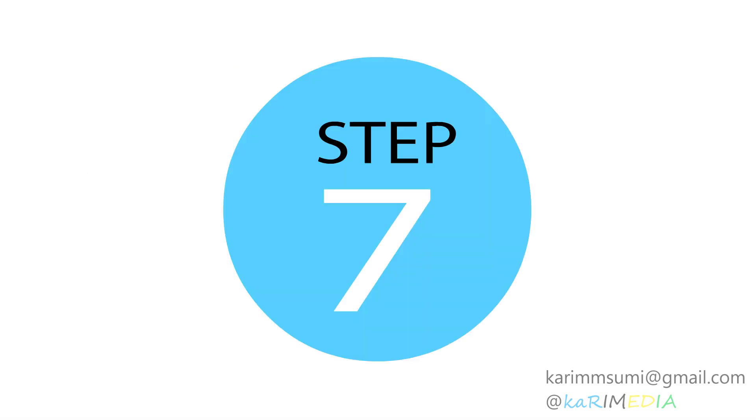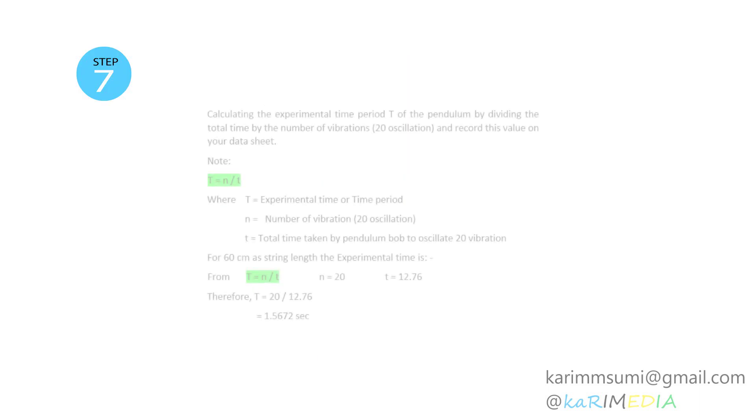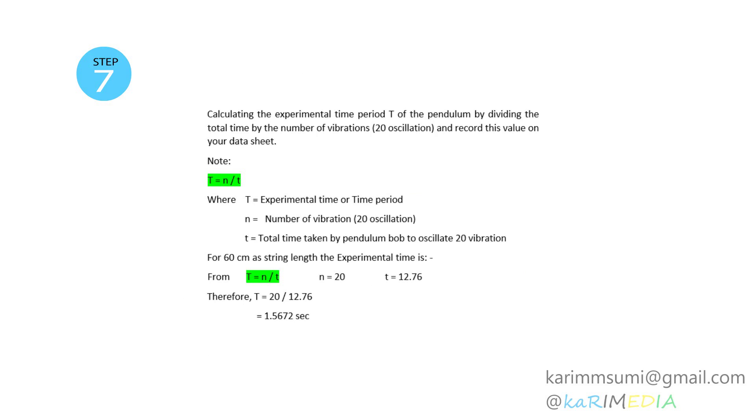Step 7: The experimental time period, represented by capital T, is calculated by dividing the total time taken to oscillate 20 oscillations by the number of oscillations, which is 20. Then, record the time period in the datasheet.